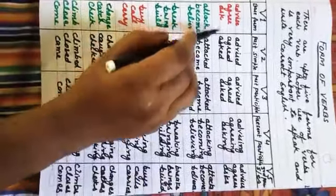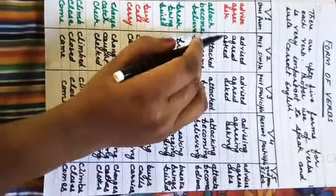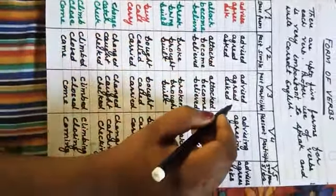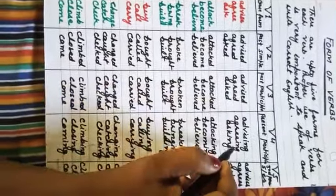Agree — meaning 'sahmat hona' (to agree). Second form: agreed. Third form: agreed. Fourth form: agreeing. Fifth form: agrees.